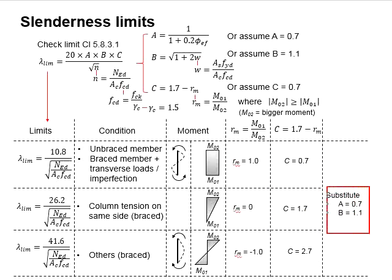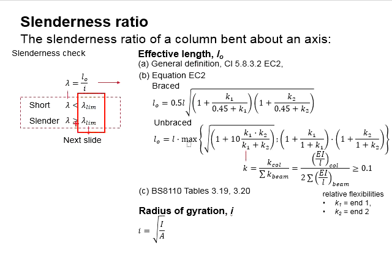Assume that A equals to 0.7 and B equals to 1.0, the slenderness limit is obtained. This slenderness limit is to be checked against the slenderness ratio to determine whether the column is short or slender.